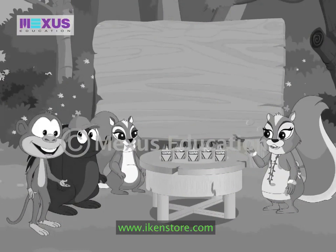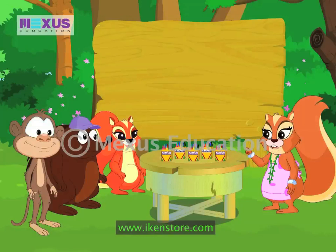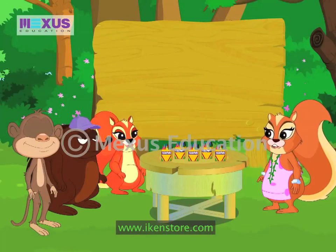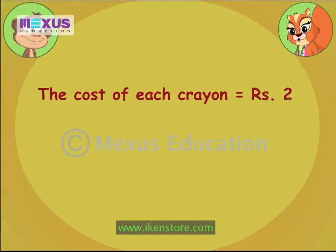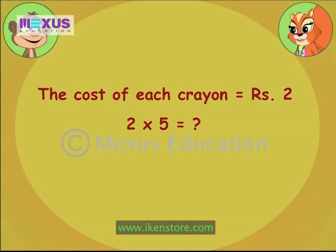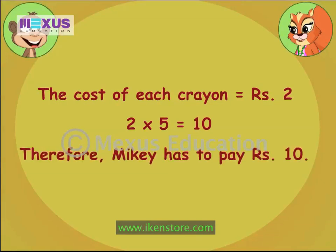How much do I pay? You both would need to pay the cost of 5 crayons. Porky calculated that the cost of each crayon is Rs. 2. Therefore, to find out the cost of 5 crayons, you simply need to multiply 2 by 5. What is 2 times 5? 2 times 5 is 10. That means I would have to pay Rs. 10.